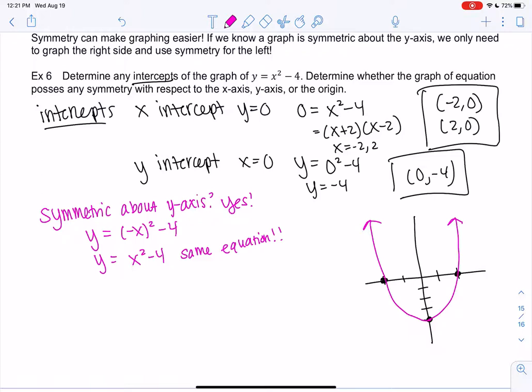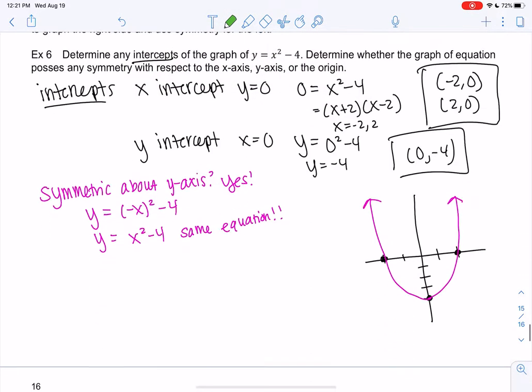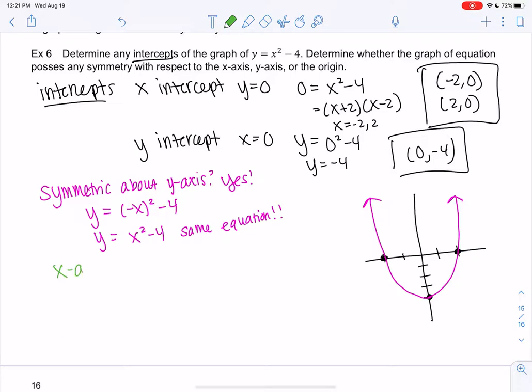And visually, we can see the others aren't true. Across the x-axis, it's not the same. But let's see how that works mathematically. So the x-axis, we're going to change y to negative y. So negative y equals x squared minus 4, which means y equals negative x squared plus 4. That is not the same, so no. That would be a different graph.